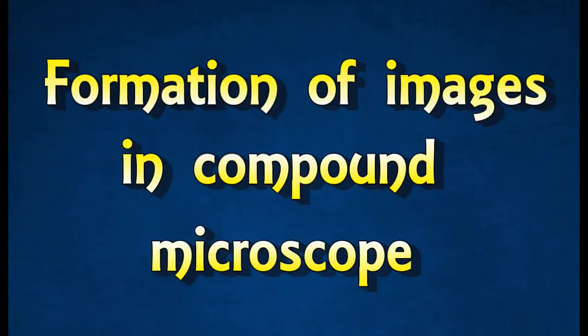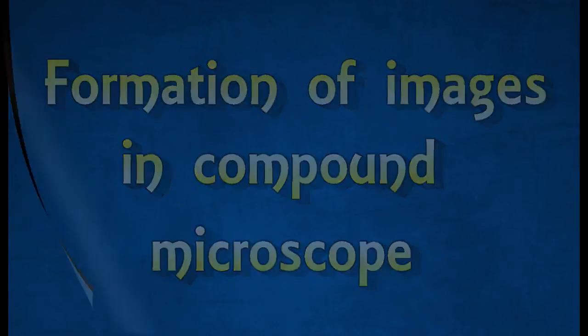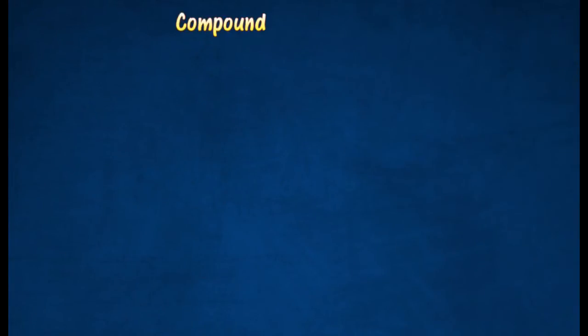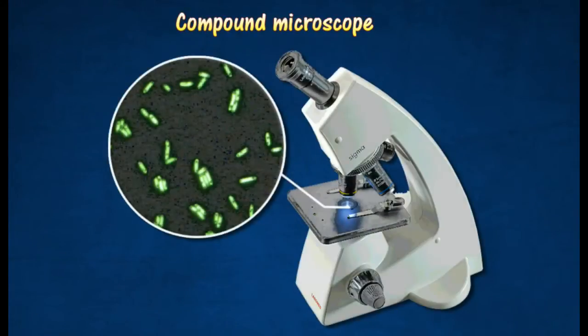Formation of Images in Compound Microscope. A compound microscope is an optical instrument used to view and examine very small objects, such as bacteria.